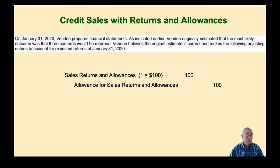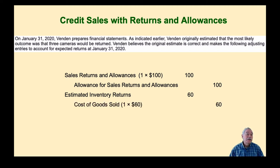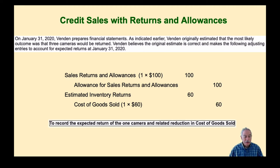This allowance is separate from the allowance for doubtful accounts, which is a different reduction in accounts receivable. We also debit estimated inventory returns — an expected asset account — and credit a reduction in cost of goods sold for $60, because we're expecting to receive that camera back and it will not have been used up. This records the expected return on January 31st.